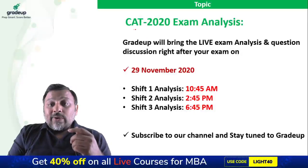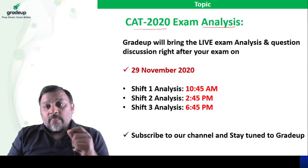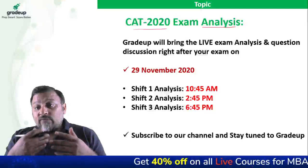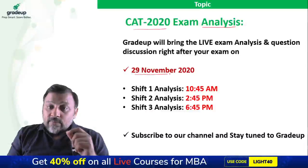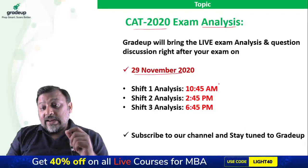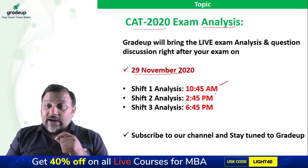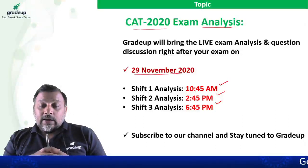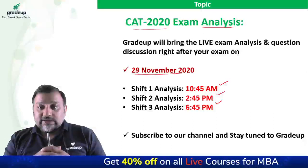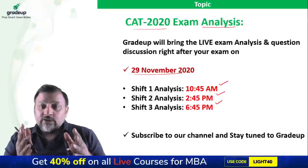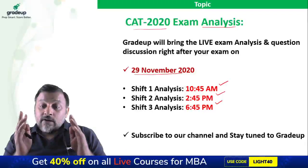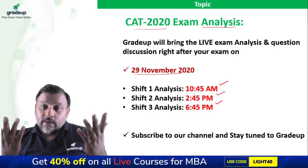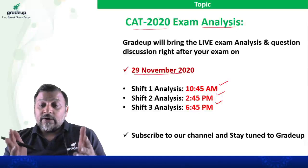Grade Up will bring live CAT 2020 exam analysis right after your exam on 29th November. Shift one analysis begins at 10:45 AM, shift two at 2:45 PM, and shift three at 6:45 PM. This analysis will be the most accurate available, conducted by a pool of expert faculty.